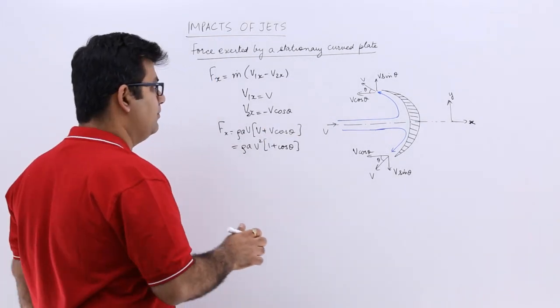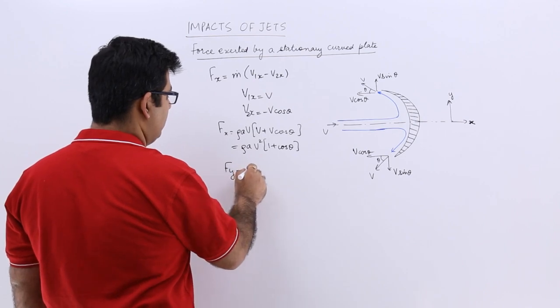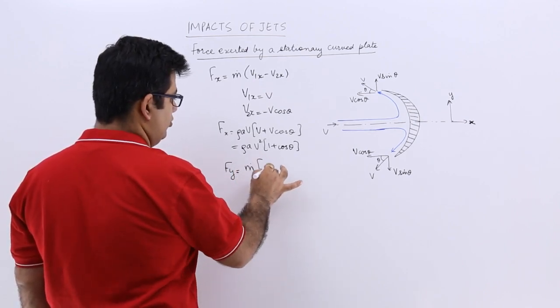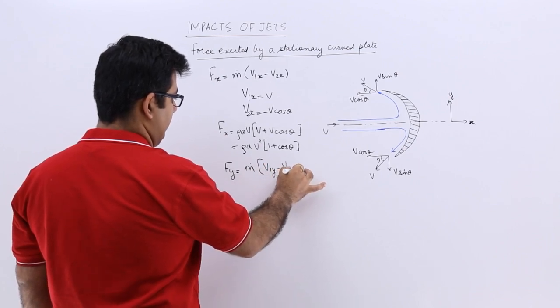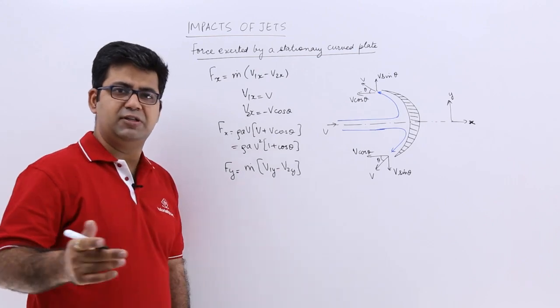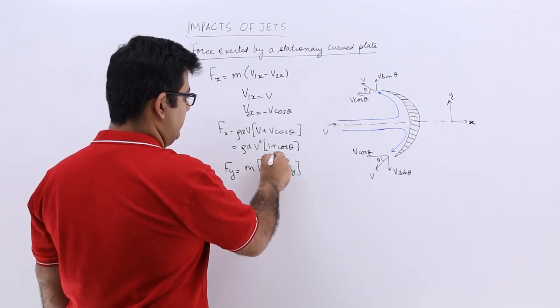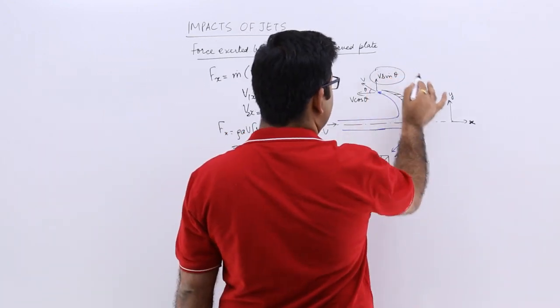So now let us come to the second part which is the calculation of Fy. It will be equal to your mass flow rate per second into the initial velocity in y and the final velocity in y. There is no initial velocity in y, so this can be taken to be 0. The final velocity in y is v sin theta.